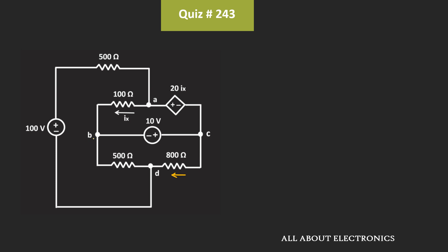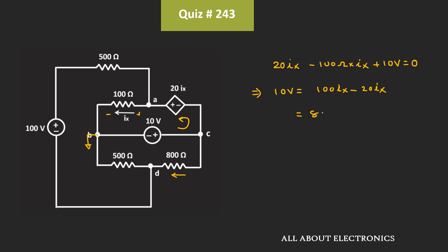So for that, let's consider node B as the reference node. And first of all, let's find this current Ix. For that, let's apply the KVL equation in this loop. So applying the KVL equation, we can write: 20Ix - 100 Ohm·Ix + 10V = 0. That means 10V = 100Ix - 20Ix = 80Ix. Or we can say that current Ix is equal to 1/8 A.